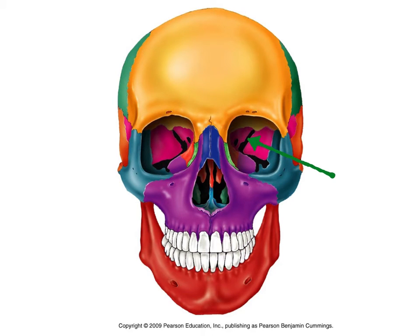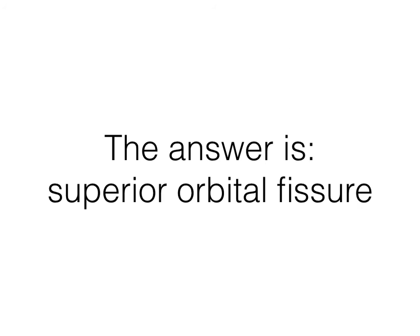In this picture, I'd like you to identify that dark crack or slit-like opening. That is a superior orbital fissure. If you can remember some of your terminology: superior means top, orbital means the eye area, and fissure is a crack — that's where the word fission comes from in physics.